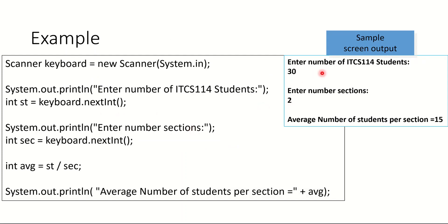Let's start with a small example. We need to enter the number of ITCS114 students, read the number from the user, and then ask the user for how many sections — for example, 2. Then we need to calculate the average number of students per section, so 30 over 2 is 15. To write this program, we start with a scanner, ask the user for how many students, read and save it in variable st, ask for how many sections, read and save it in variable section, then divide st over section and output the result.